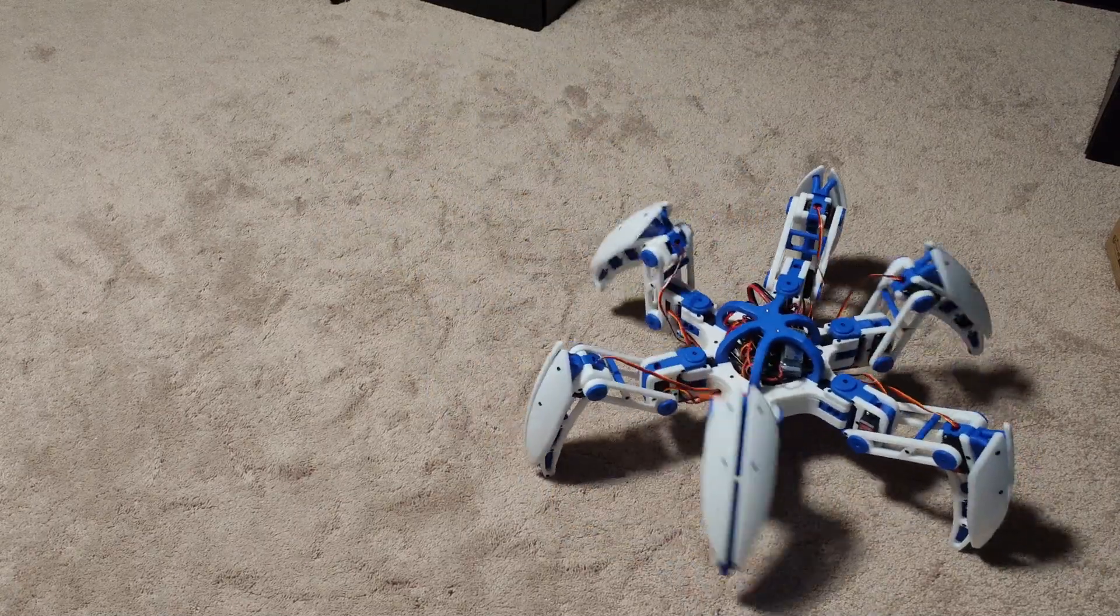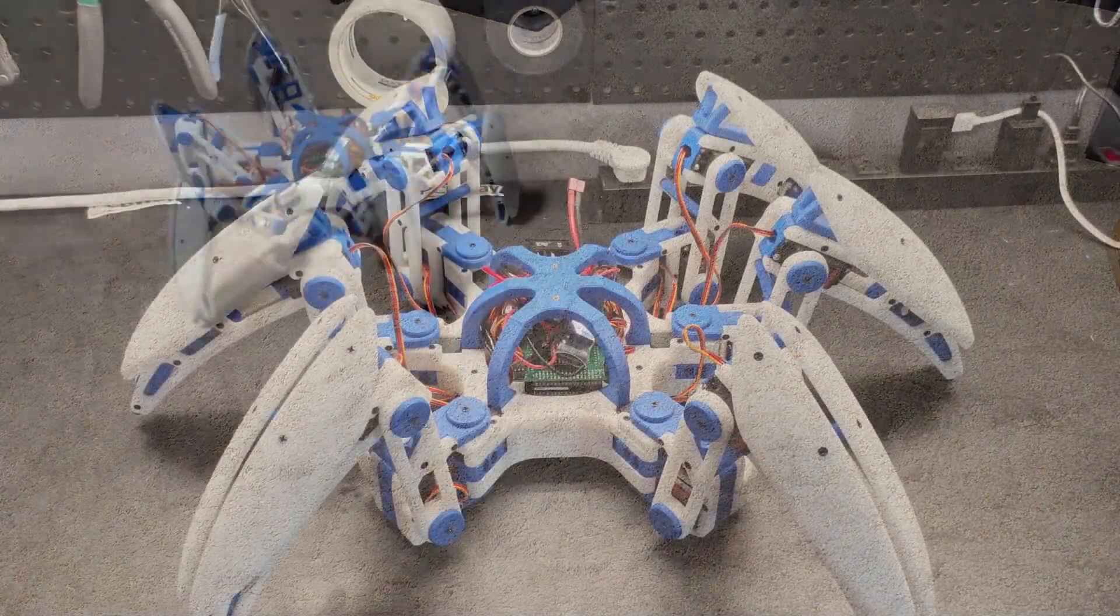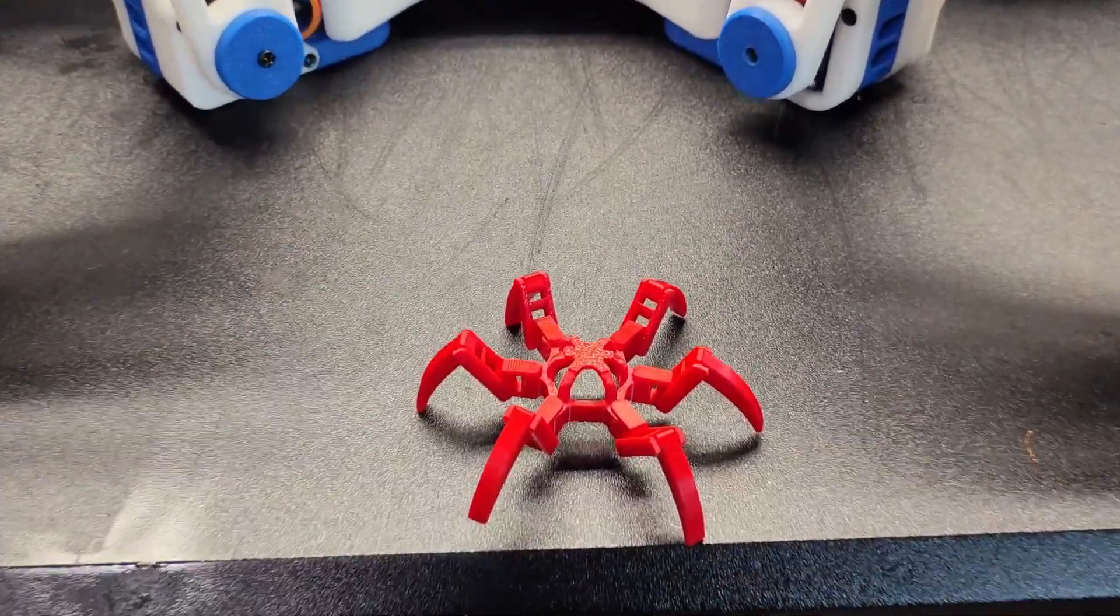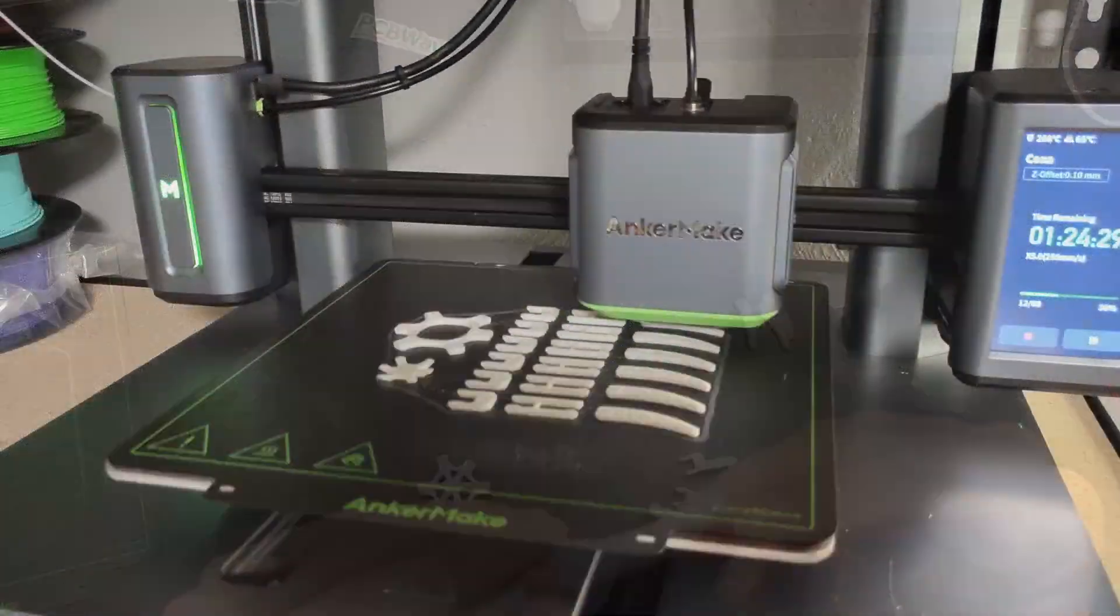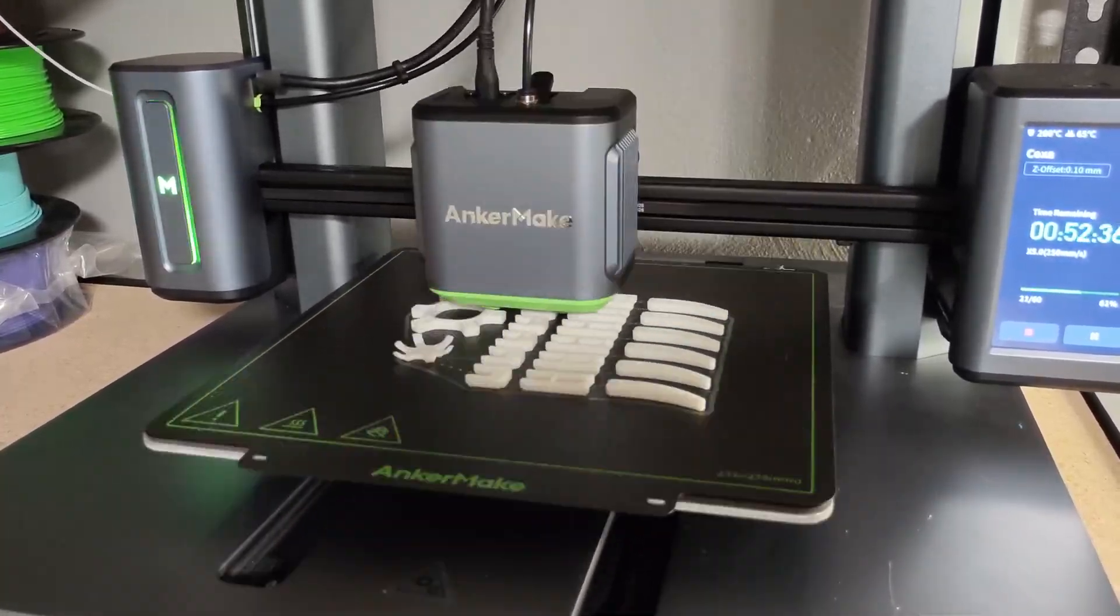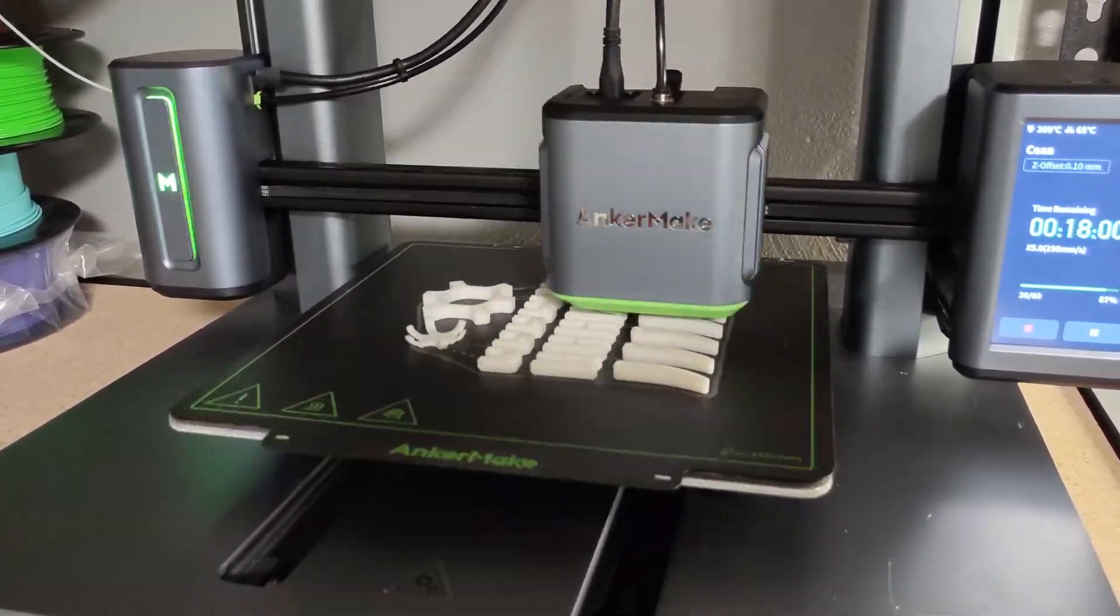I'm building an Arduino powered hexapod from scratch, but in this video I'll be showing you how I made a miniature version of it and how you can make one yourself. No supports required and all the pieces snap together so no need for screws or glue. And I'm printing it with the AnkerMake M5, the sponsor of this video.